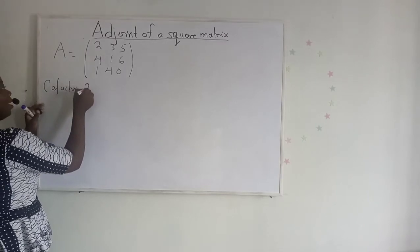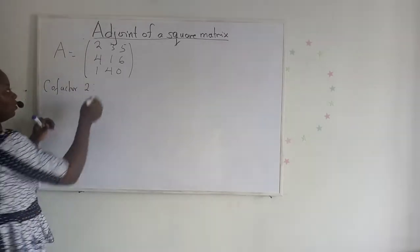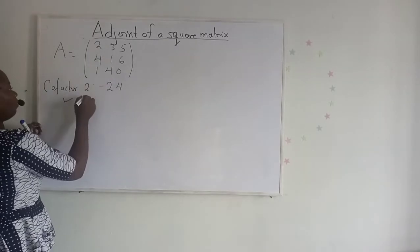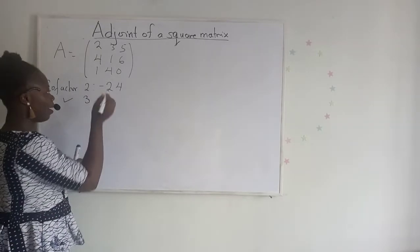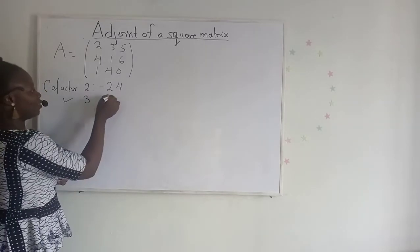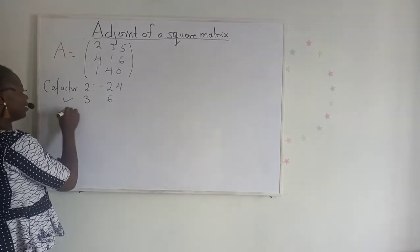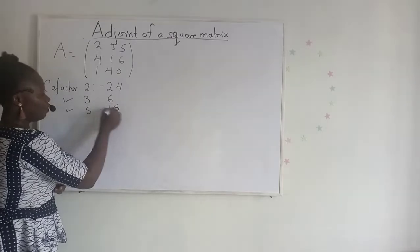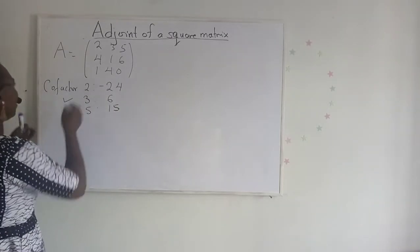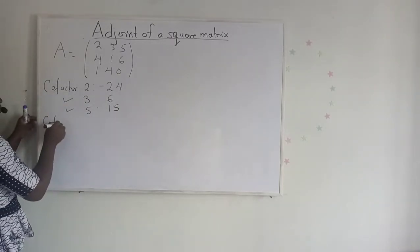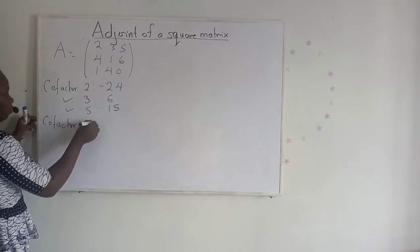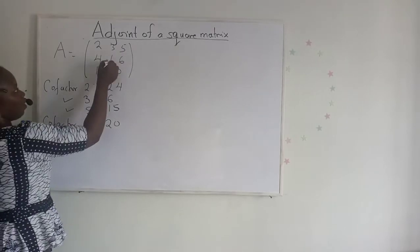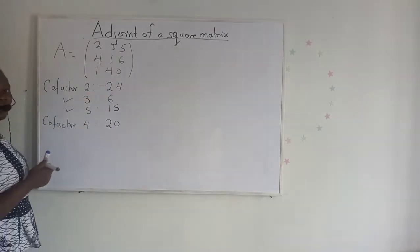The cofactor of 2 was negative 24. The cofactor of 3 was 6. The cofactor of 5 was 15. And the cofactor of 4 was 20.